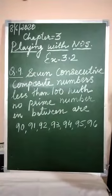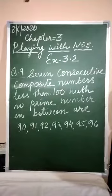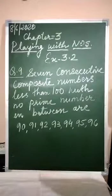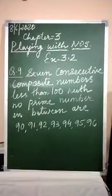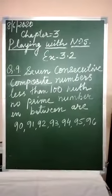Question number 9. Write 7 consecutive composite numbers less than 100 so that there is no prime number between them. So here students, you need to find out the consecutive composite numbers less than 100 with no prime numbers between them.